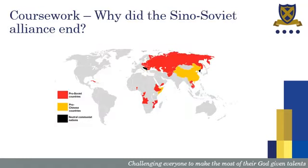Finally, we complete a piece of coursework, which is an essay of just under 4,000 words. This is an opportunity for you to get to know a subject in lots of detail and to immerse yourself in historiography. Our inquiry here is why the Sino-Soviet alliance ended, and you'll read tens of different historians' views about this topic, and come to develop your own nuanced line of argument.